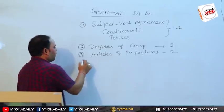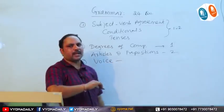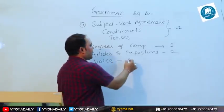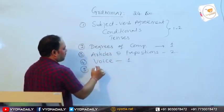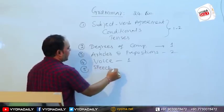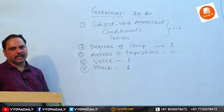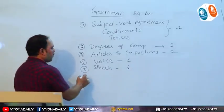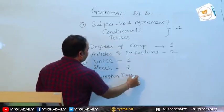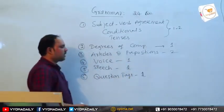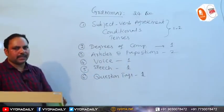The next important area is voice — how to change active voice into passive voice. One question is asked from this area. The fifth topic is speech, that is direct and indirect speech, from which one question will be asked. Question tags is another key area where one question is asked.